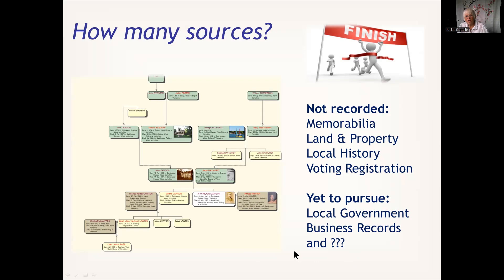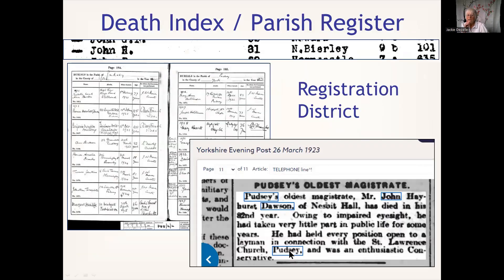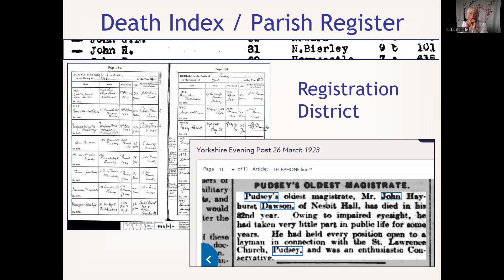Looking at a death index, one of the things we need to consider for our place description is the registration district. This place has been in three differently titled registration districts - of course, it's not that they moved. We've got a GRO index, a parish death burial, and a newspaper. It tells us at the bottom that this person held every position open to a layman in connection with the parish church and also a political organization, so those people in that place would know him very well. Sometimes it's about that atmosphere - not just who he knows, but who knows him.